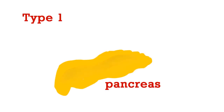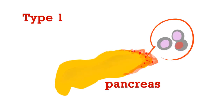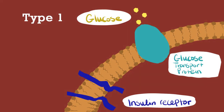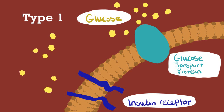In type 1 diabetes, the immune system attacks the pancreas beta cells, which produce insulin. As the beta cells die, insulin production stops altogether. Consequently, blood sugar is not taken into the cells, depriving cells of chemical energy and causing high blood sugar levels.